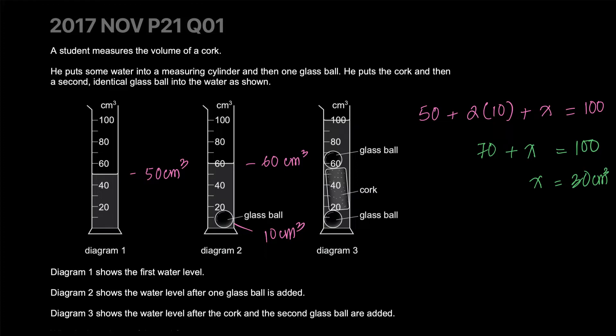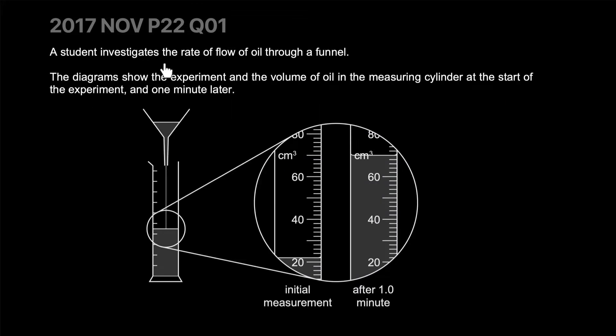A student investigates the rate of flow of oil through a funnel. The diagram shows the experiment and the volume of oil in the measuring cylinder at the start and one minute later. You start off close to 20, but it's actually 22. This entire area has five graduations dividing the next 10 values, so 10 centimeter cubes divided evenly between five means each graduation is two.